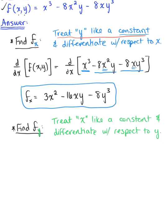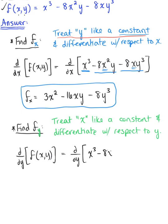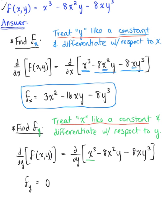To emphasize what we are differentiating with respect to, we indicate this using d/dy. We take d/dy of both sides: d/dy of x³ - 8x²y - 8xy³. The first thing we encounter is x³, but we're treating x like a constant — and the derivative of a constant is zero, so x³ goes to zero.